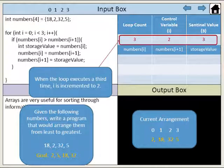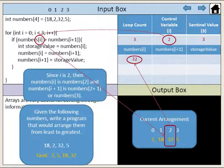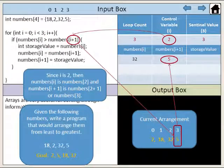When the loop executes a third time, i is incremented to 2. Since i is 2, numbers[i] is numbers[2] and numbers[i+1] is numbers[2+1], or numbers[3]. The value of numbers[i] is now 32, and the value of numbers[i+1] is 5.